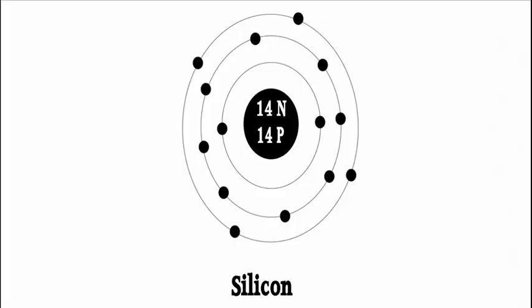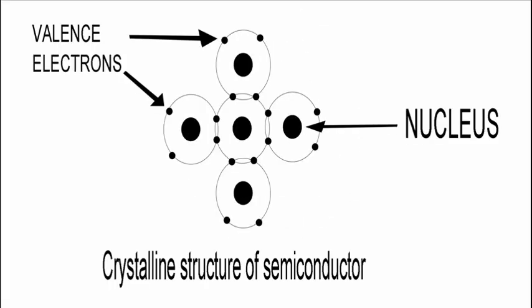The N-junction solar cells use a semiconductor such as silicon. The atomic scale structure of silicon is shown here.